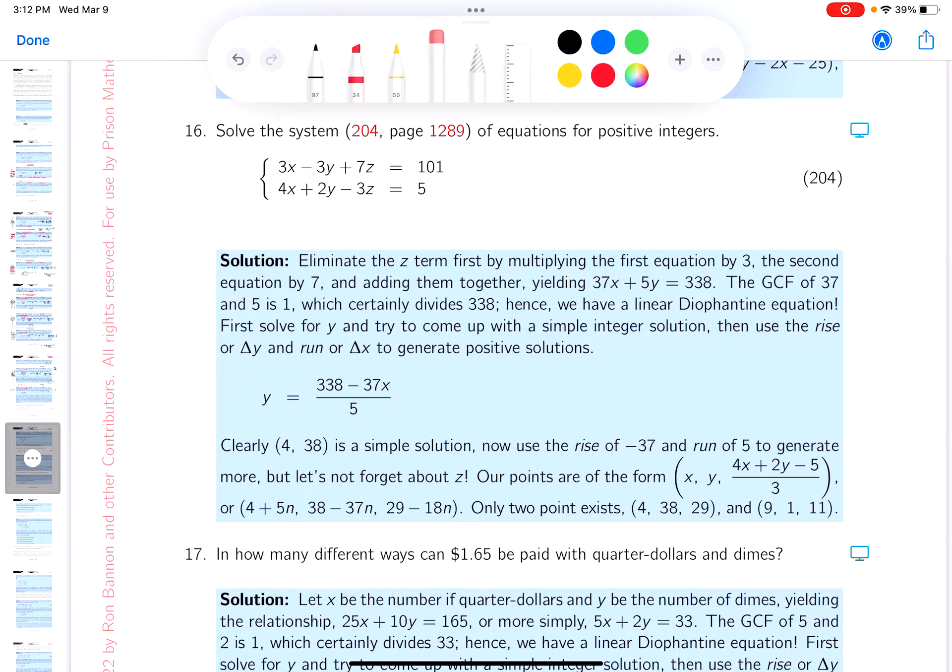Okay, number 15 was just like 16, so I'm more experienced with this, right? So the first thing I would do is probably try to eliminate the z in the problem. And the way I would do that, I'd probably multiply the top equation by 3 and the bottom equation by 7.